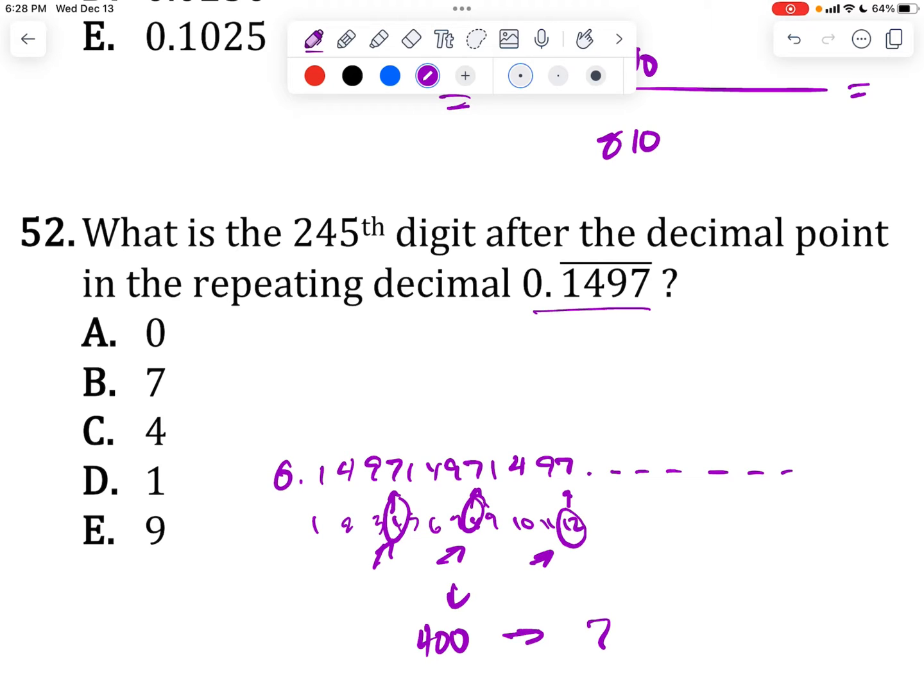So any digit that has a count of being a multiple of 4, like for example, what's the 28th digit, what's the 400th digit, what's the 4,000th digit, I can tell you it's 7 because every fourth value is 7. So how do I apply this to this?